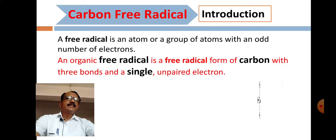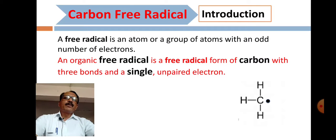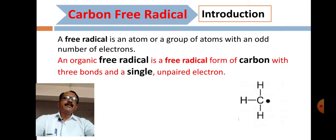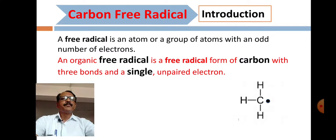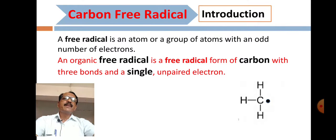An organic free radical is a free radical form of carbon with three bonds and a single unpaired electron. Carbocation has a positive charge, carbanion has a negative charge, whereas carbon free radical is neutral — not positive, not negative. We define it as: an organic free radical is a free radical form of carbon with three bonds and a single unpaired electron.